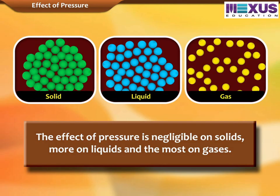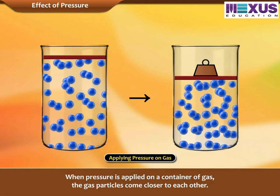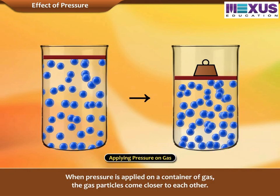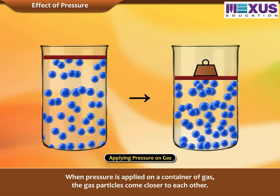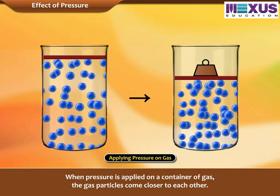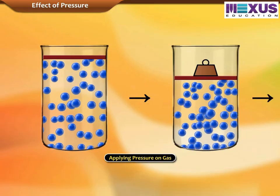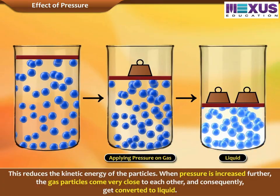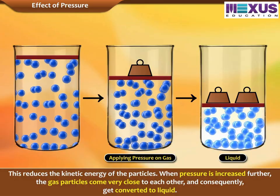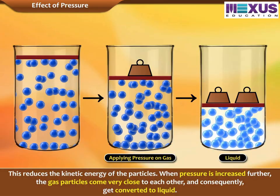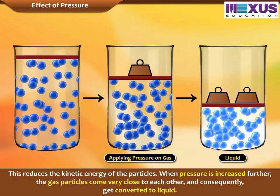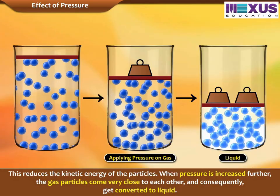The effect of pressure is negligible on solids, more on liquids, and the most on gases. When pressure is applied on a container of gas, the gas particles come closer to each other. This reduces the kinetic energy of the particles. When pressure is increased further, the gas particles come very close to each other and consequently get converted to liquid.